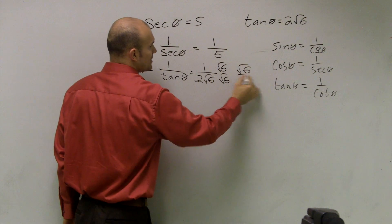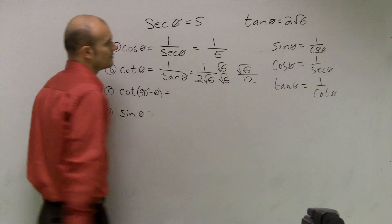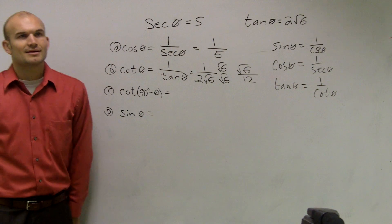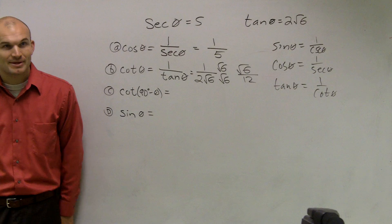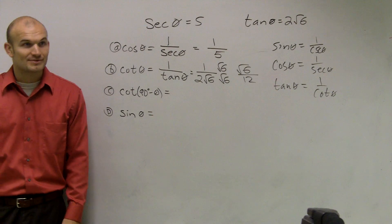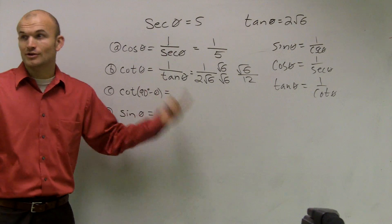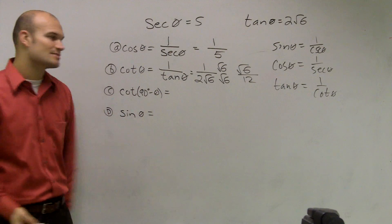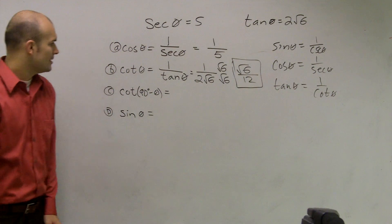And obviously we know we can't have a radical on the bottom, so again we're going to rationalize the denominator. That becomes radical 6 over 12. You guys remember when you were like, when am I ever going to use rationalize the denominator? You see how often we're using it in this class? But if you practiced it earlier and you learned it and got it good, then it goes a lot quicker now.